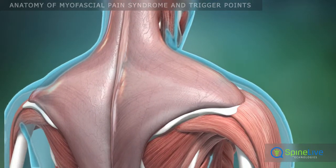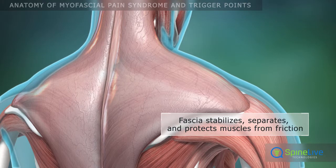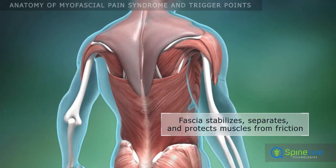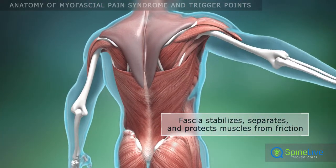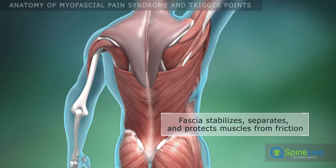Each muscle is surrounded with a connective tissue sheath called fascia. It stabilizes and separates muscles, reducing friction between them.